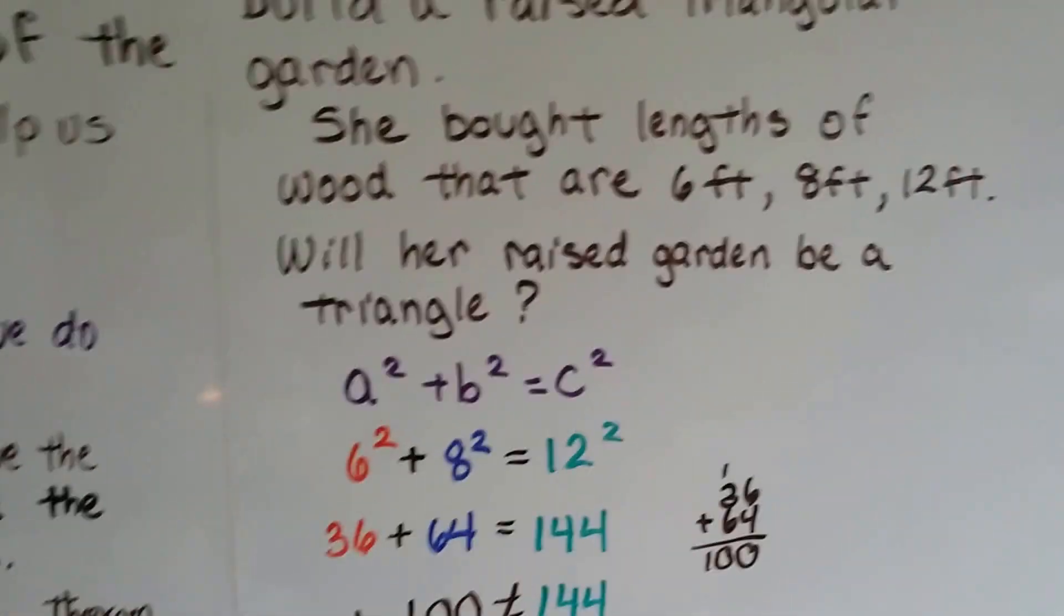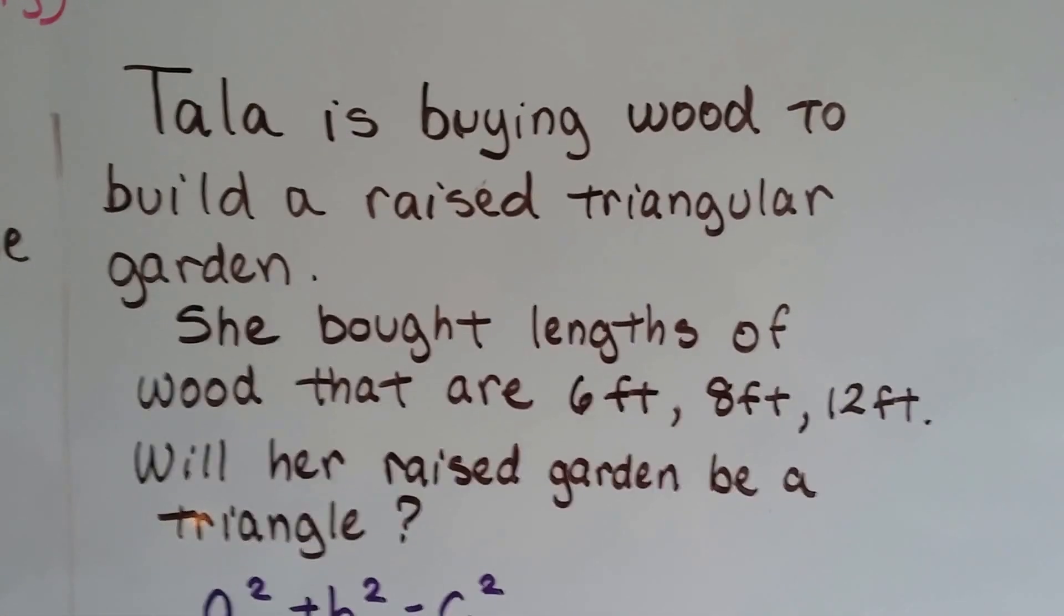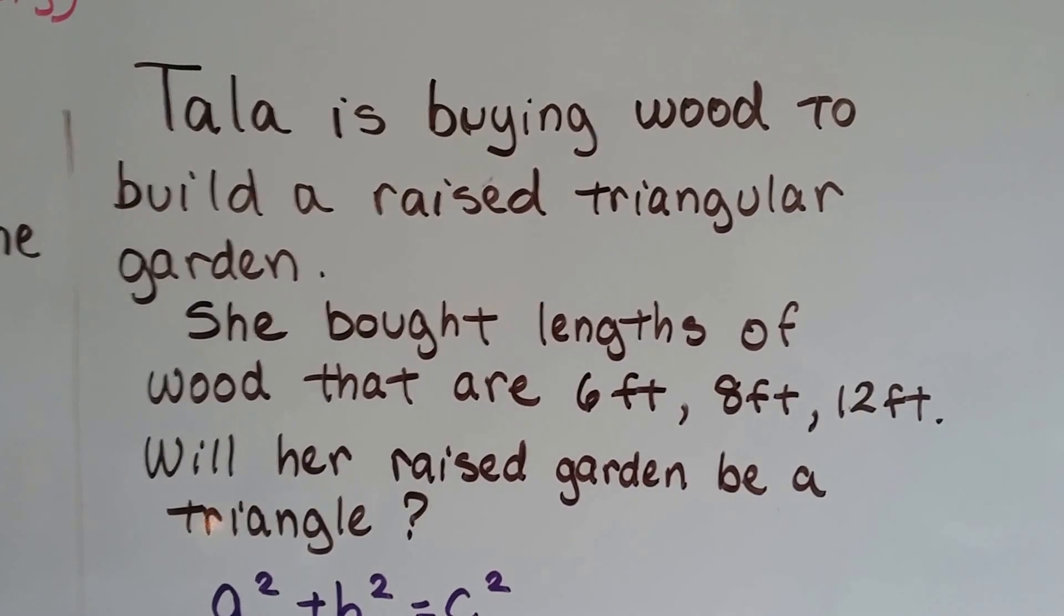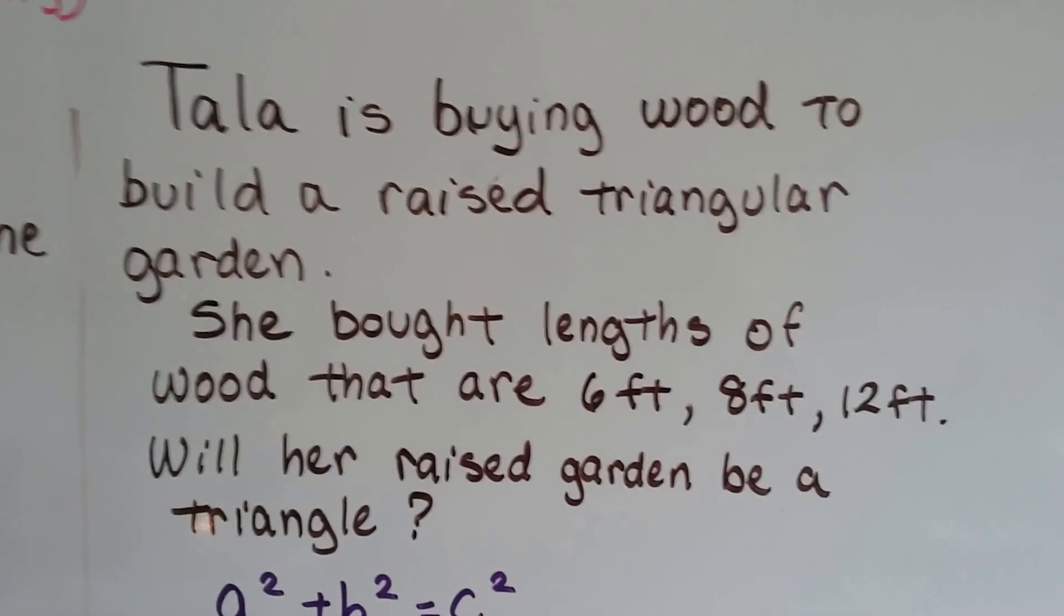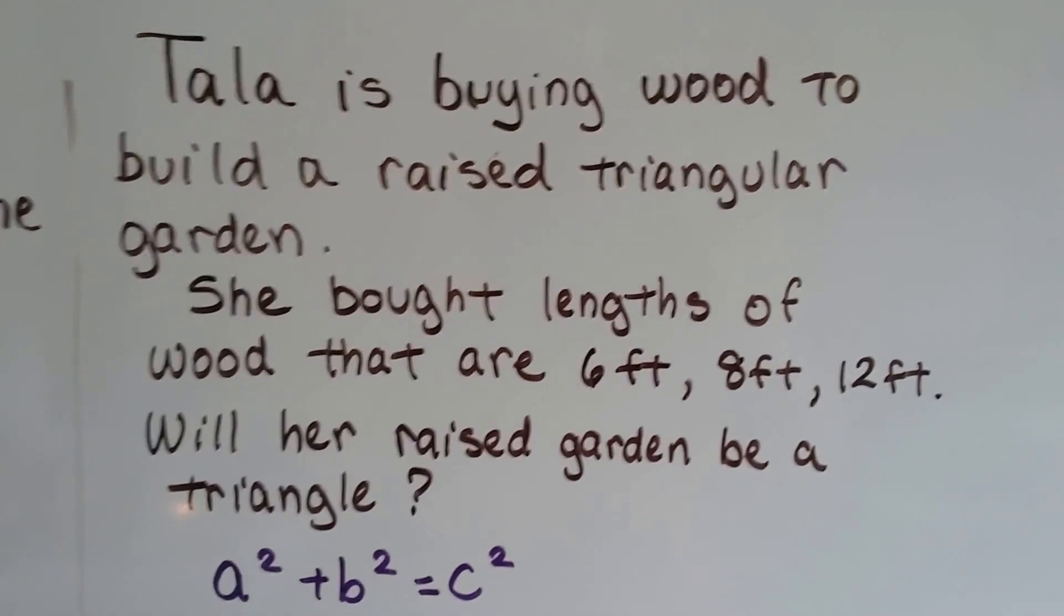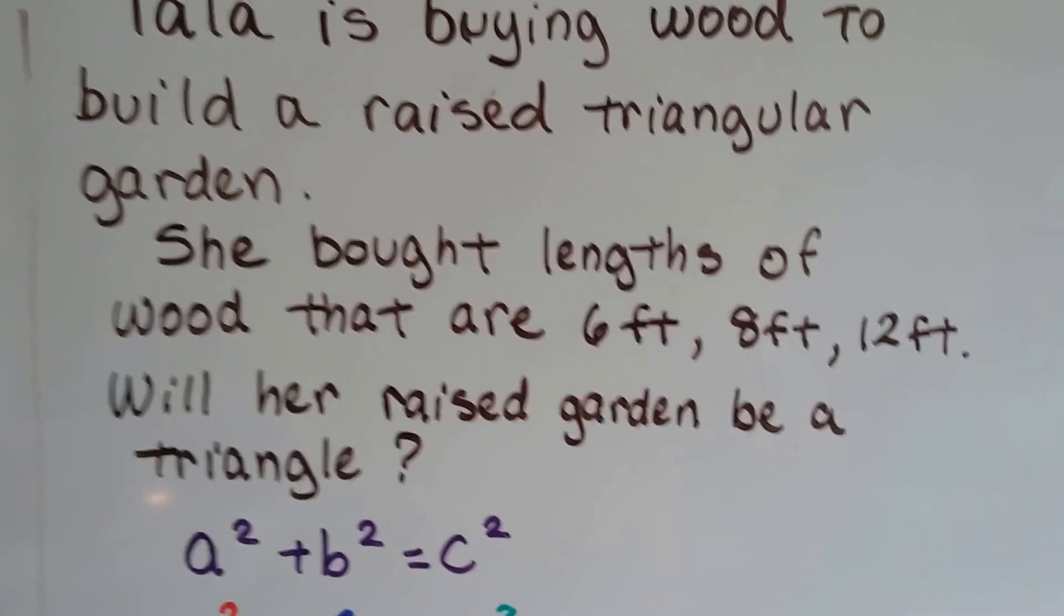Let's look at our real-life problem. Tal is buying wood to build a raised triangular garden and she bought lengths of wood that are 6 feet, 8 feet, and 12 feet. Will her raised garden be a right triangle?